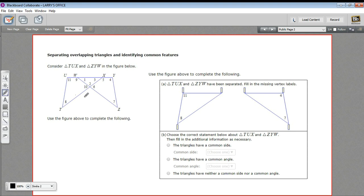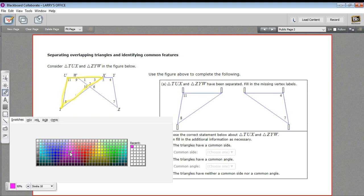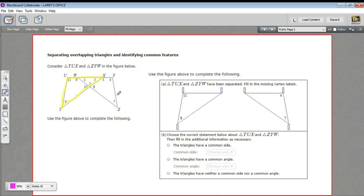In this first figure you can see we have two triangles. Let me put these in different colors. They're asking us to look at TUX, so let me draw them in yellow. There's TUX. And then we'll take a different color for the other triangle, ZYW.